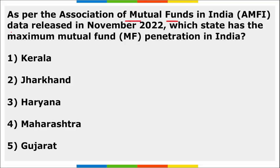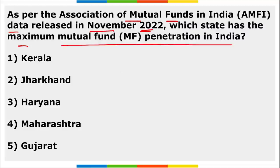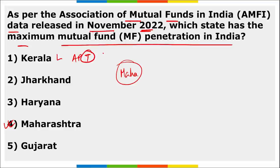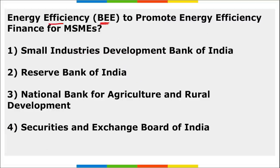The first question: As per the Association of Mutual Funds in India (AMFI) data released in November 2022, which state has the maximum mutual fund penetration in India? The correct answer is Maharashtra — Maharashtra saw the maximum mutual fund penetration. Regarding the lowest penetration, Kerala, Andhra Pradesh, Telangana, and Bihar saw the lowest mutual fund penetration.